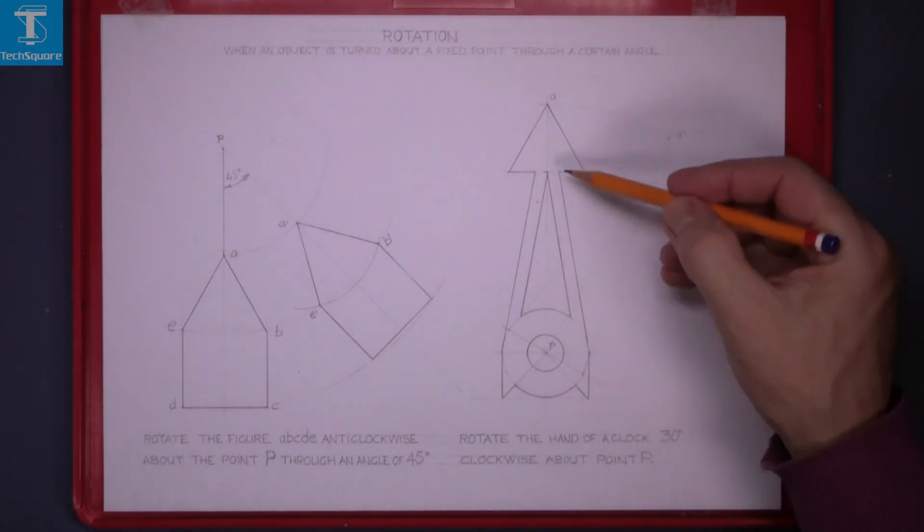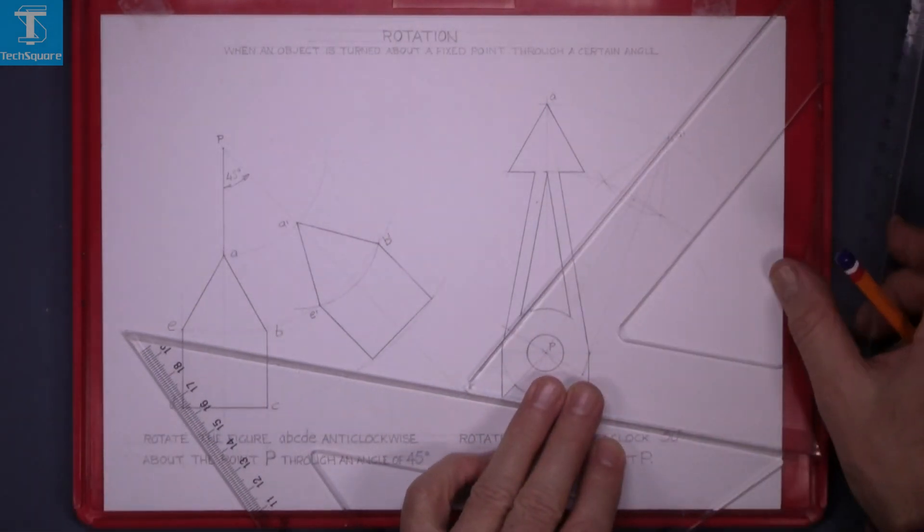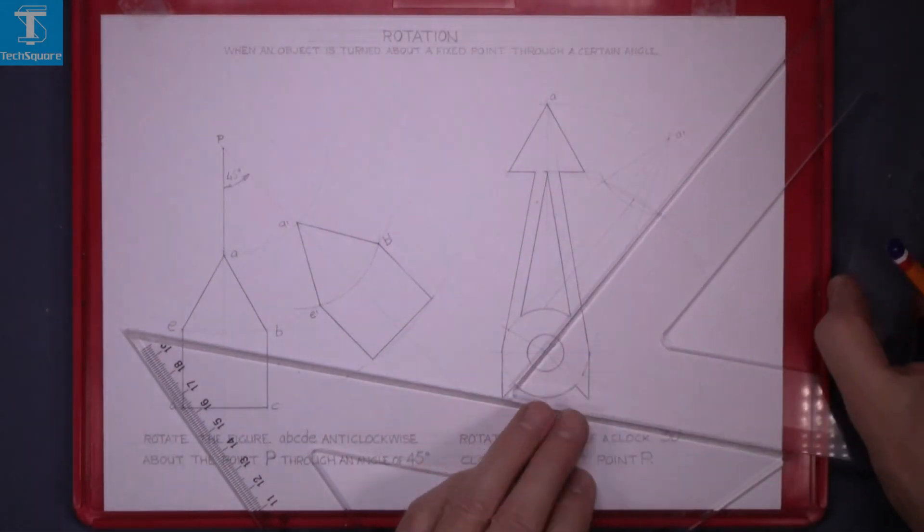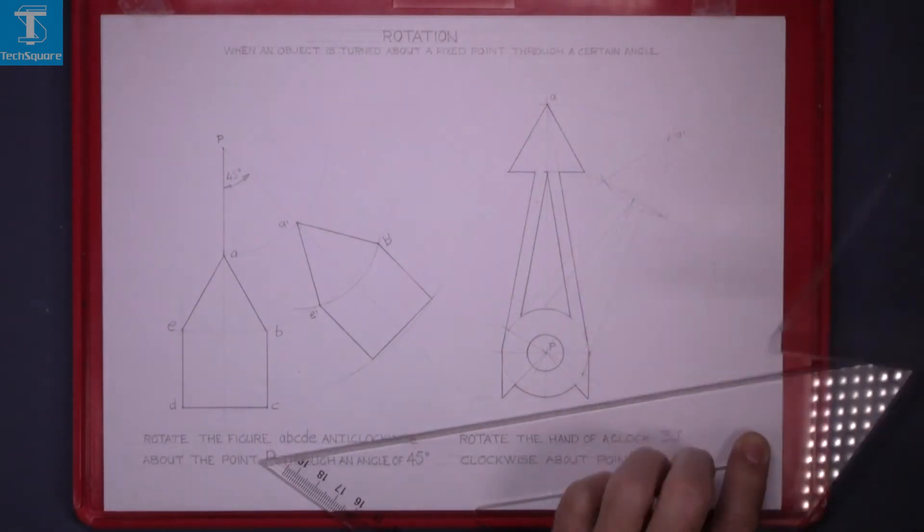Now to get the inside lines, we have to draw parallel lines from the centre point. And using your two set squares, draw parallel to the outside line you've just found.